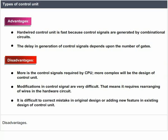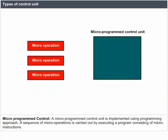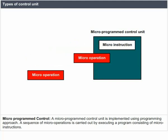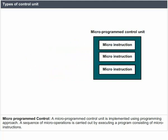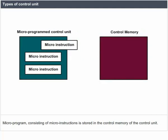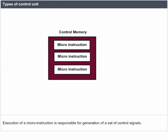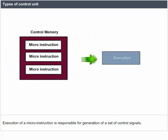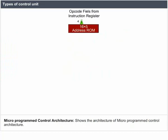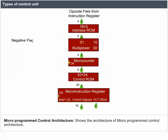Micro-programmed control: a micro-programmed control unit is implemented using a programming approach. A sequence of micro-operations is carried out by executing a program consisting of micro-instructions. The micro-program consisting of micro-instructions is stored in the control memory of the control unit. Execution of a micro-instruction is responsible for generation of a set of control signals.